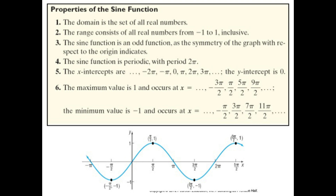The sine function is periodic with period 2π. The x-intercepts are …, −2π, −π, 0, π, 2π, 3π, … and the y-intercept is always 0. The maximum value of sin x is 1, occurring at x = −3π/2, π/2, 5π/2, 9π/2, etc. The minimum value is −1, occurring at x = −π/2, 3π/2, 7π/2, 11π/2, etc. The maximum and minimum values occur at angles that are odd integral multiples of π/2.